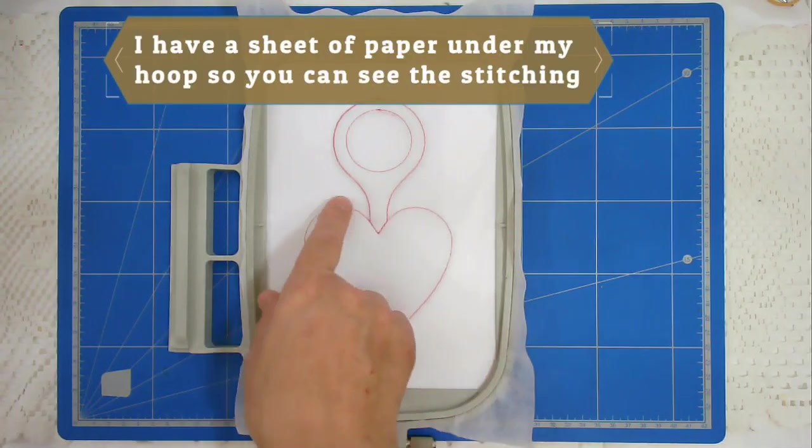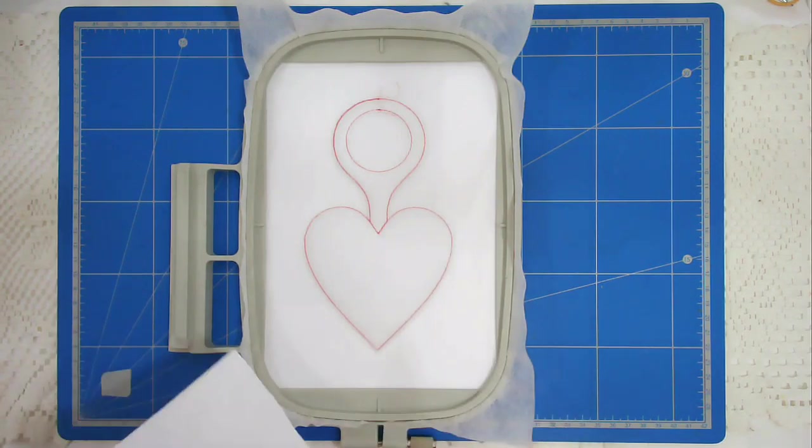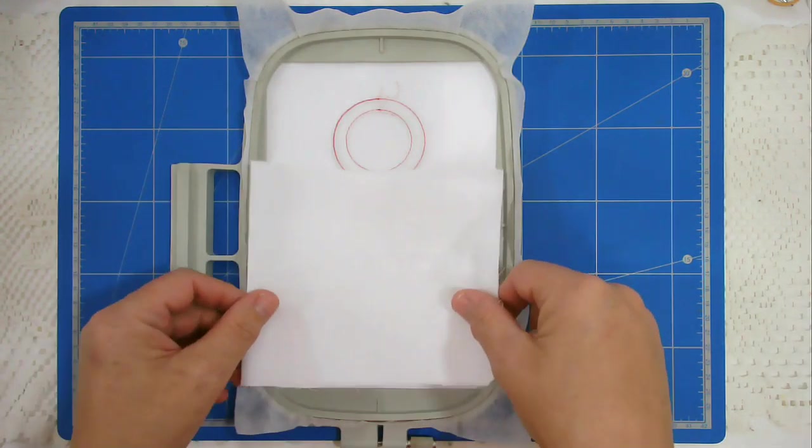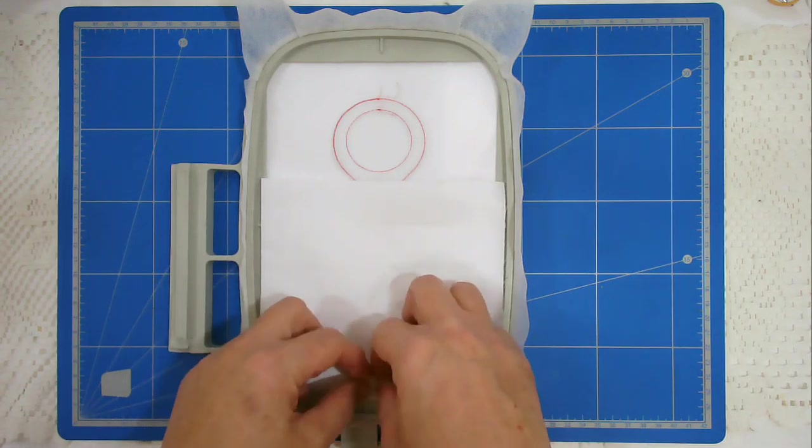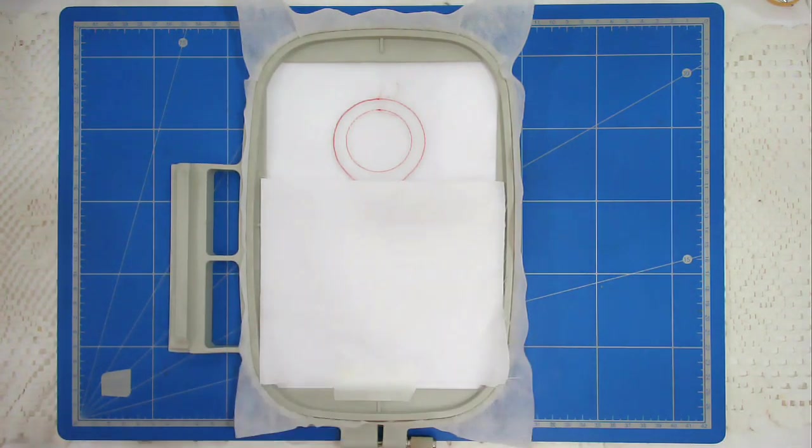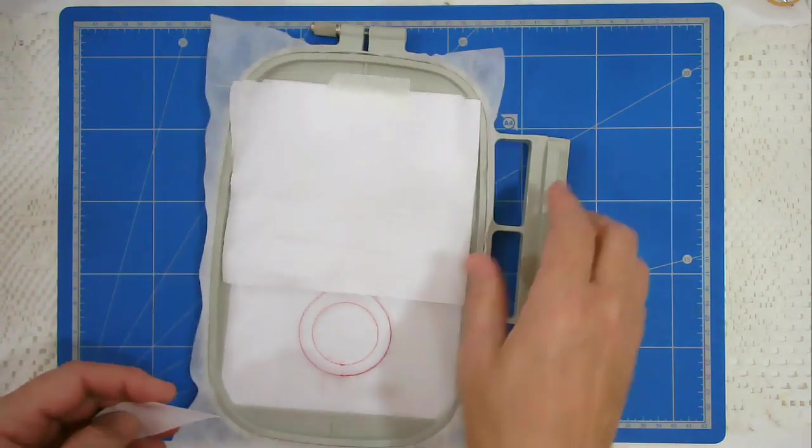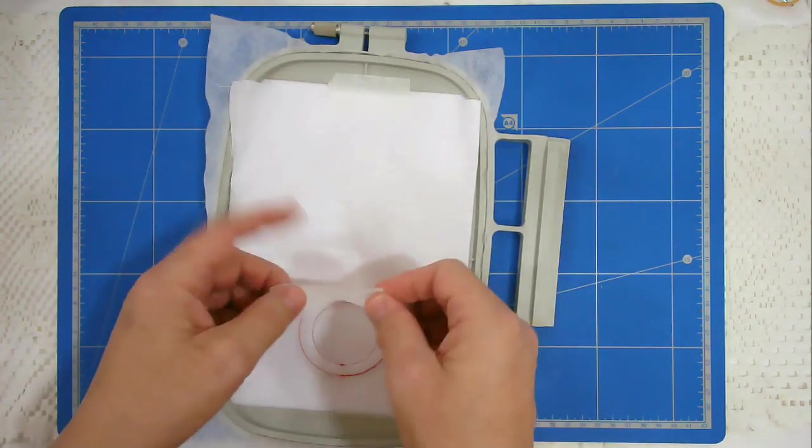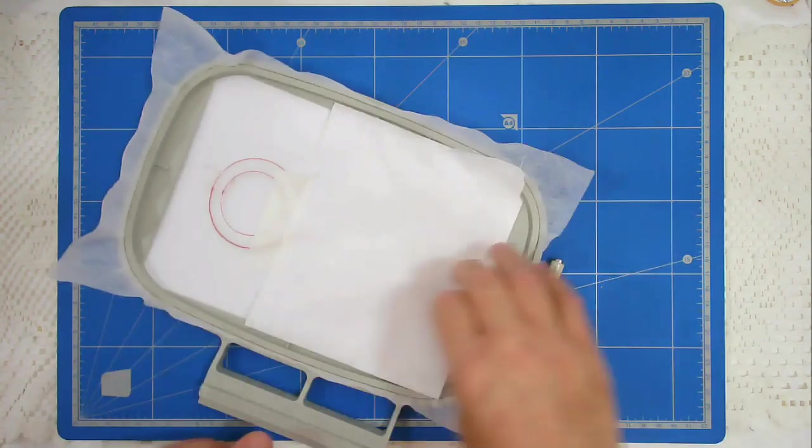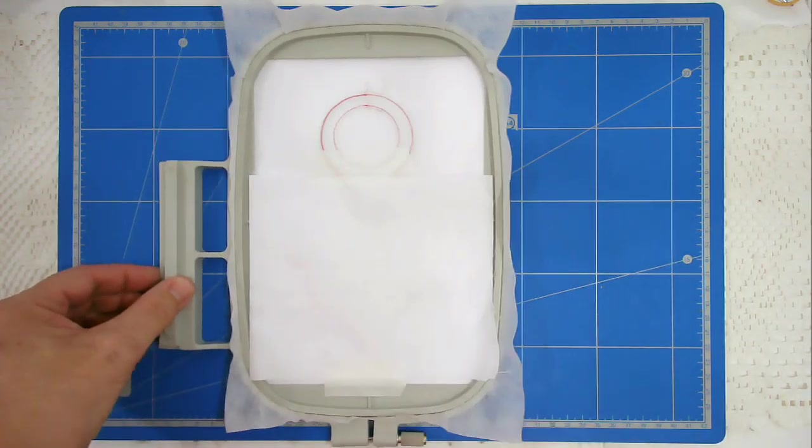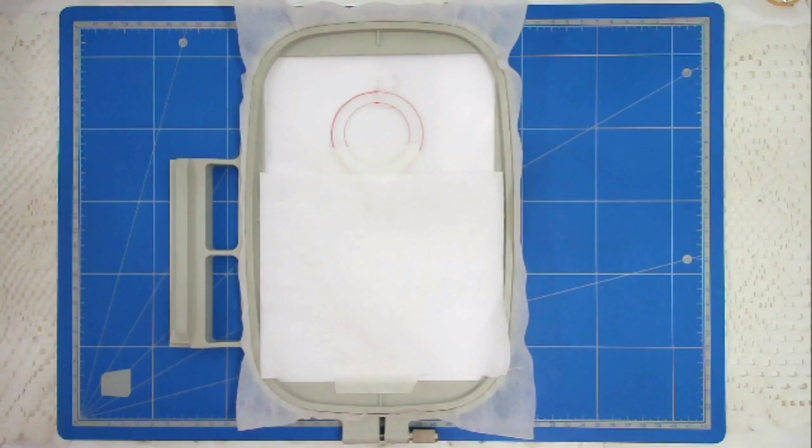We're now going to place my first fabric over the heart area and I'm going to tape it down so it doesn't move. I'm going to put that back into my machine and stitch around number 3 to secure it.